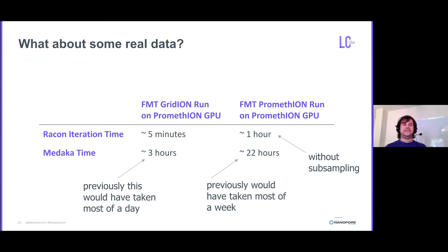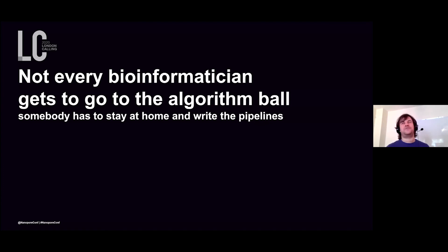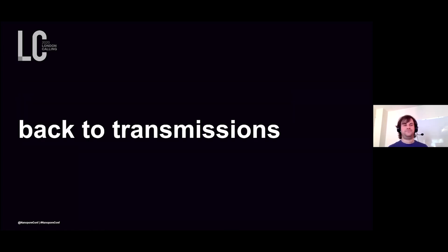So what about some real data? The FMT Gridion runs that would have previously taken most of a day to polish can now be done in just a matter of hours. And for the PromethION runs that used to take maybe a week to polish, we can do them in less than a day. I think we can all pat ourselves on the back and say we've done a great job. This brings me to the point that not every bioinformatician necessarily has to write a cool new algorithm or assembler — somebody should stay and just actually write some really good pipelines.